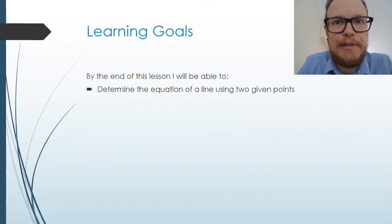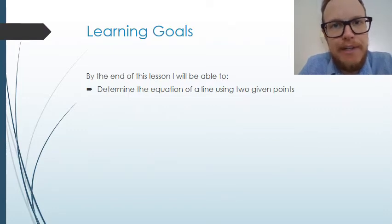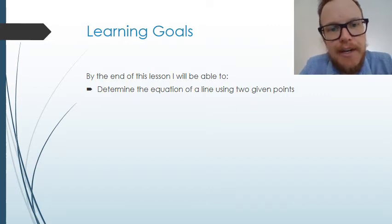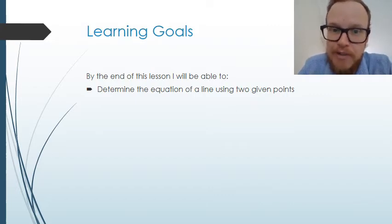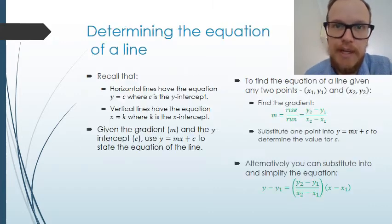Today we're going to look at finding a rule for a linear graph. The learning goals for today's lesson are that we're going to be able to determine the equation of a line using any two given points on the Cartesian plane.